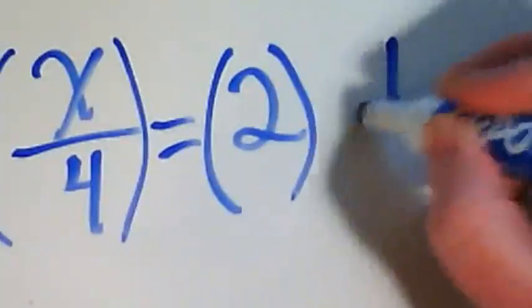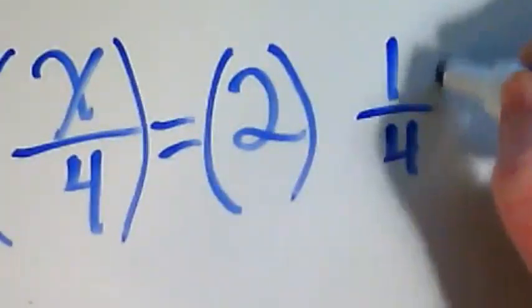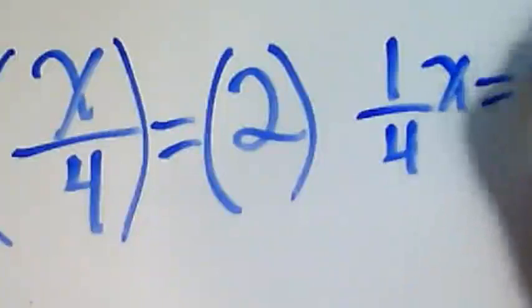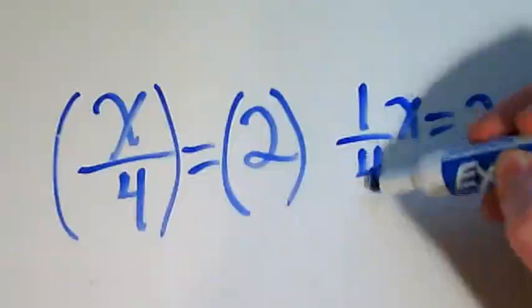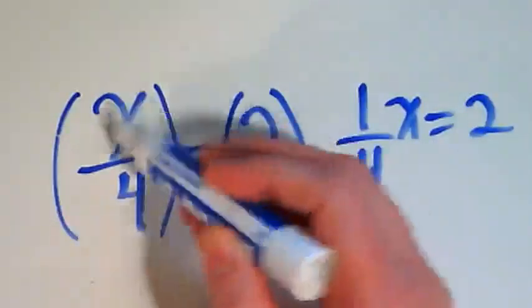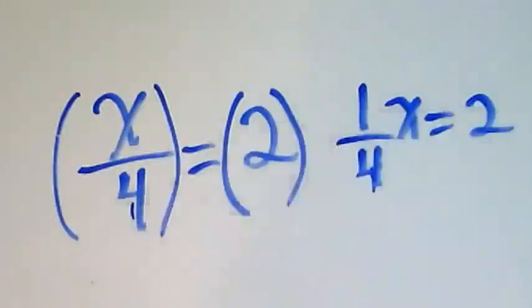I really have 1 fourth times x equals 2. Why? Because the x is on the numerator and the 4 is in the denominator.